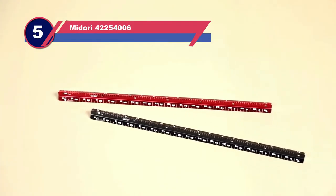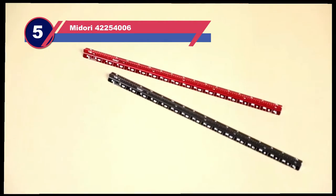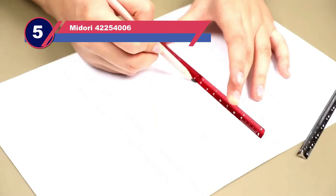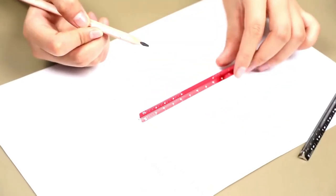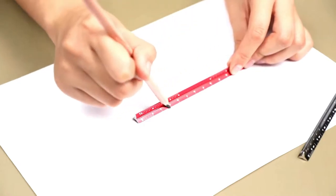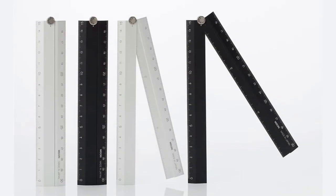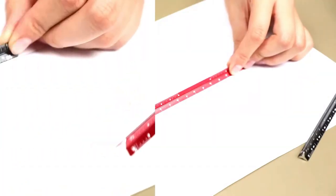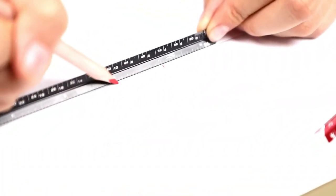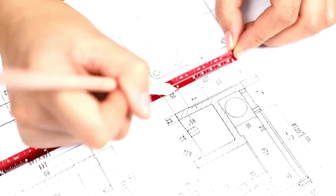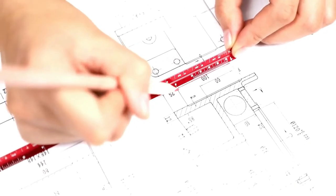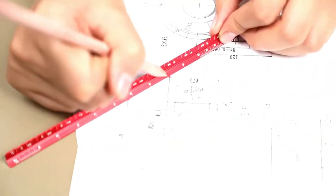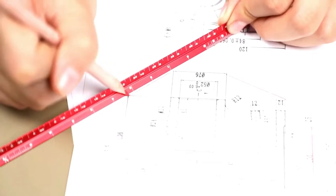Number five: Midori 42254006 ruler. This cool aluminum ruler only measures in centimeters but it still has plenty going for it. That's because this also may be the best angle ruler on this list. At its full extended length it measures 30 centimeters. However, a hinge allows it to be folded in half for easier transport or for measuring along corners and angles.